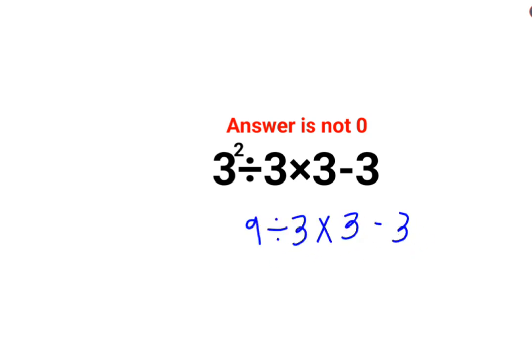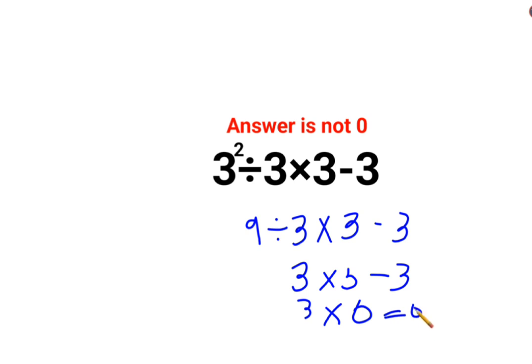So 9 divided by 3 is 3, multiplied by 3 minus 3. They thought that 3 multiplied by 0 gives an answer of 0. No, that is not how this works.